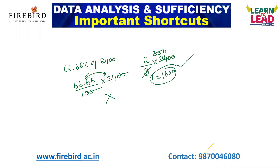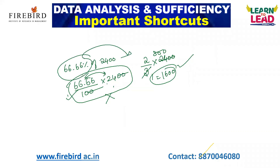This is how you should work smartly. You should know that 66.66% has a fractional equivalent of 2 by 3, and apply that directly instead of the longer multiplication method.